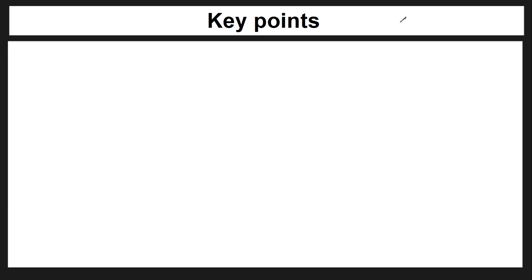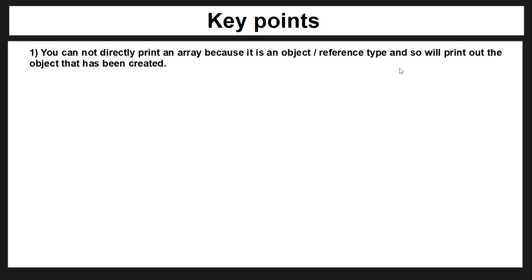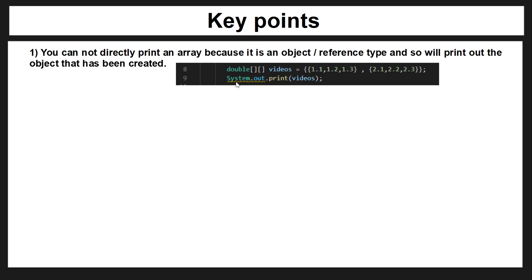The last thing you need to be aware of before we go into the questions is how to access all of the array. As we know from our previous video on reference types, an array is a reference type. Because it's a reference type, you cannot directly print an array. If you create your array and try to print the whole thing, it's actually going to print out the object that you've created — not the values. So it's important to be aware that you can't directly print out an array.